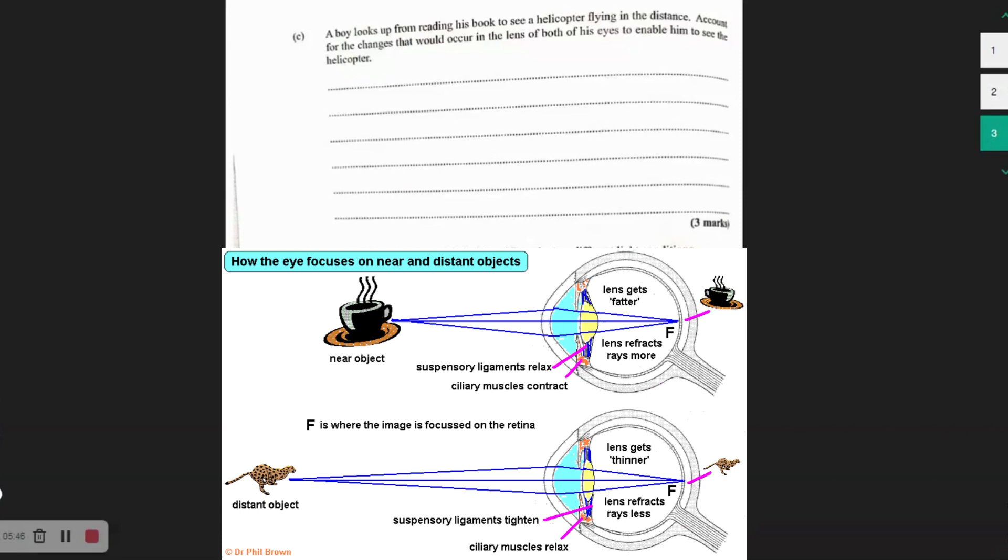This happens because light coming in from near objects coming in at a divergent angle. So therefore we have a lot more refraction to do to get the light rays to bend properly to aim or to fall directly on the retina.